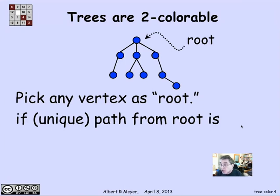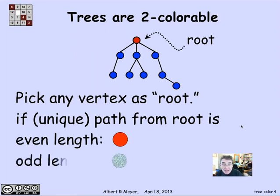So we're just going to color vertices by whether the path from the root is of odd or even length. If it's of even length, color it red. And if it's of odd length, color it green.